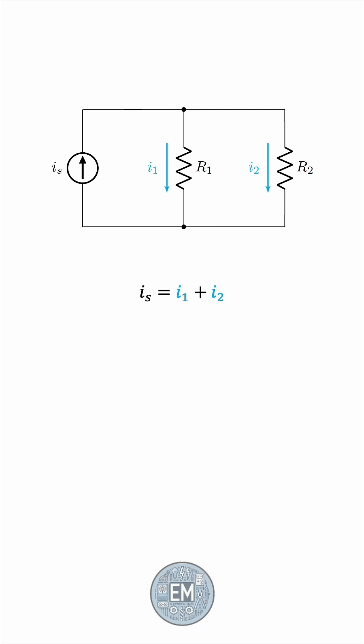Intuitively, since resistance is the opposition to the flow of current, we expect the larger resistance to get a smaller current, and the smaller resistance to get a larger current.